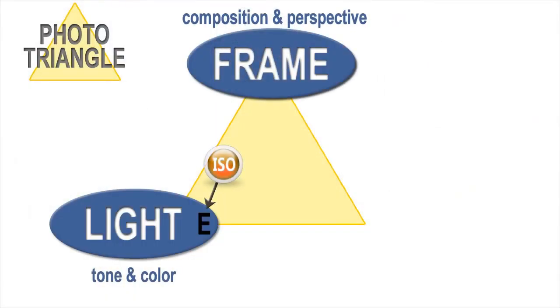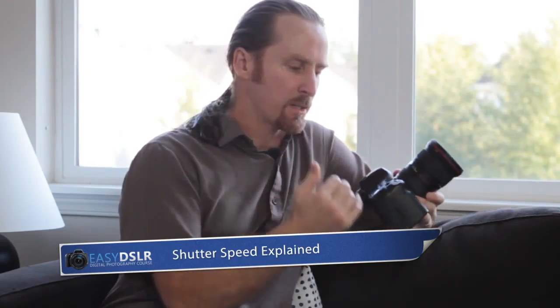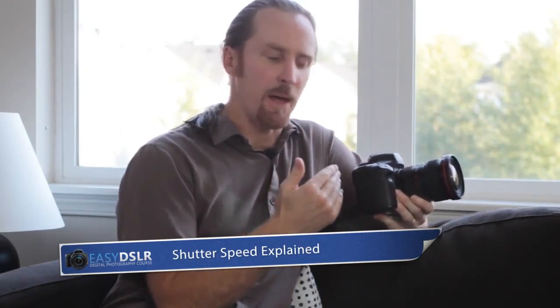Welcome back. We've looked at two components of exposure: the ISO, which is the sensitivity of the sensor, and in the last video we looked at aperture, which is the lens opening. Now the final component to getting the correct exposure is shutter speed.